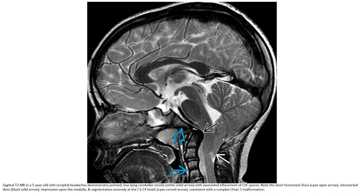This is also the sagittal T2 image, and the sagittal T1 image showing the cleavage at C3, C4, consistent with a complex Chiari malformation.